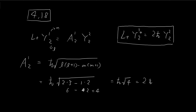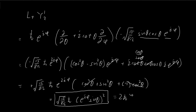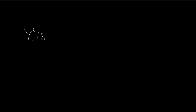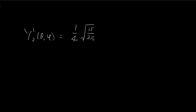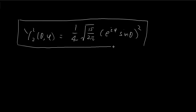Going back, we know applying the raising operator to y12 also gives 2ℏ multiplied by y22. So dividing 2ℏ to the other side gives us y22. Writing the answer neatly: the 1/2 combines with the 8 under the square root — since 8 = 2×4, the 4 comes out of the square root as another 1/2, combining to give 1/4. The final answer is y22 equals (1/4) times the square root of (15/2π) multiplied by e to the power of iφ times sine squared θ. This is how we obtain y22 from y12 using the raising operator.